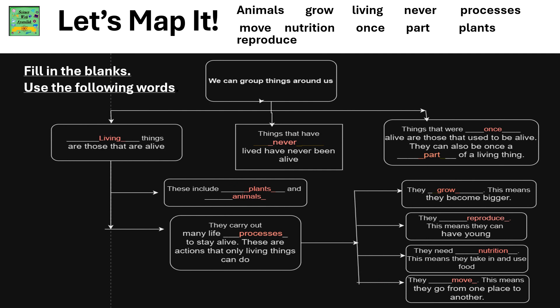Let's Map It. Fill in the blanks using the following words: animals, grow, living, never, processes, move, nutrition, once, part, plants, and reproduce.